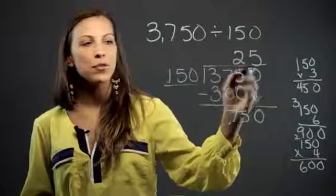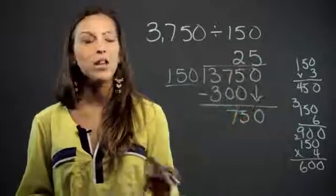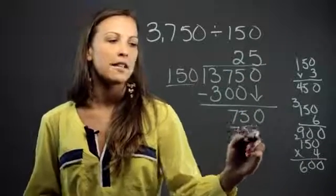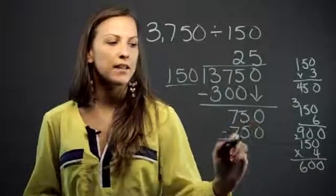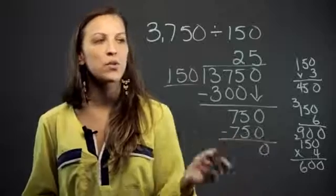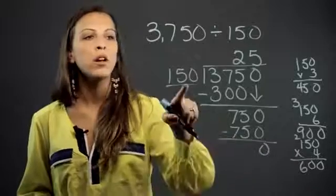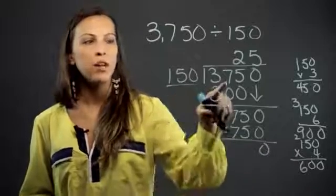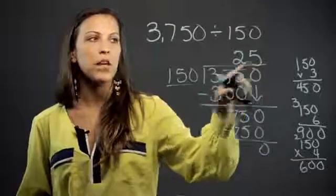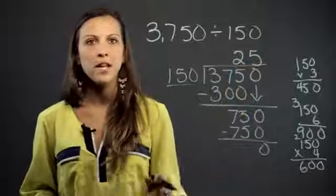And when we do 5 times 150, we indeed get 750. And 750 minus 750 is 0, so there's no remainder. 150 goes into 3,750 exactly 25 times.